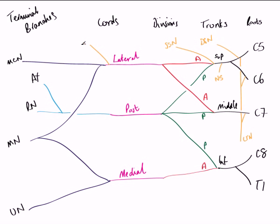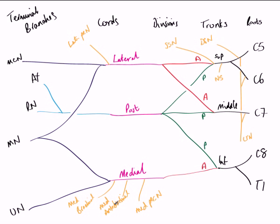Coming away from the lateral cord, we have the lateral pectoral nerve. And if we have a lateral pectoral nerve, we are also going to have a medial pectoral nerve, which comes from the medial cord. Also coming from the medial cord are two cutaneous nerves: the medial brachial nerve and the medial antebrachial nerve, which supply cutaneous innervation to both the medial surface of the arm and the medial surface of the forearm. Coming from the posterior cord, we have the thoracodorsal nerve, and coming from either side of it are the upper subscapular nerve and the lower subscapular nerve.